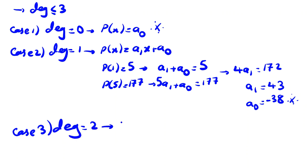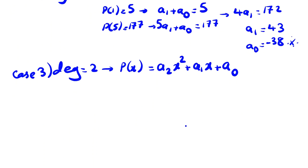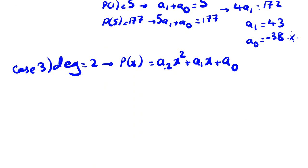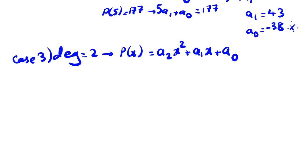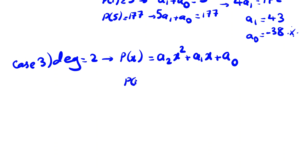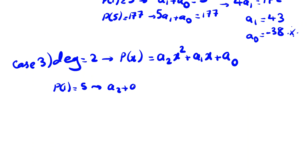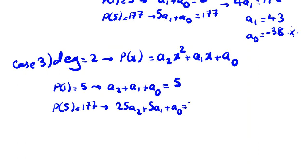The remaining cases are degree 2 and degree 3. For Case 3, degree 2: p of x equals a_2 x^2 + a_1 x + a_0. Setting p of 1 equal to 5 gives a_2 + a_1 + a_0 = 5. Setting p of 5 equal to 177 gives 25a_2 + 5a_1 + a_0 = 177.